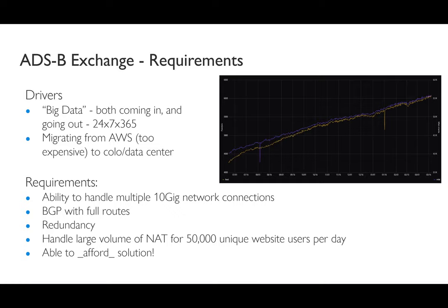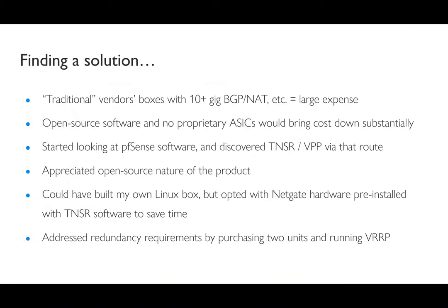With that decision, we needed a router that could handle a lot of data and a lot of connections. Looking at available solutions, traditional vendors with anything that can run 10-plus gig with BGP was going to be pretty expensive. We liked the open source software capability — not using those proprietary ASICs would bring down the cost quite a bit. We found VPP and Tensor through a unique path. We started looking at PF Sense, again open source based, and then discovered that NetGate had this Tensor offering with VPP. That really worked well — it was open source and met our needs and budget.